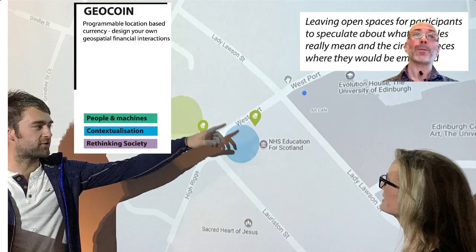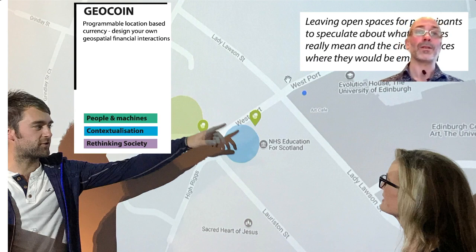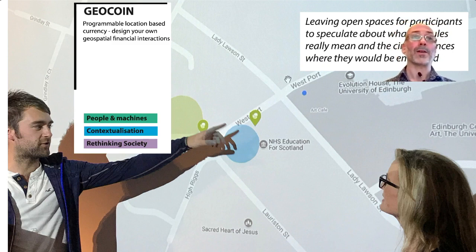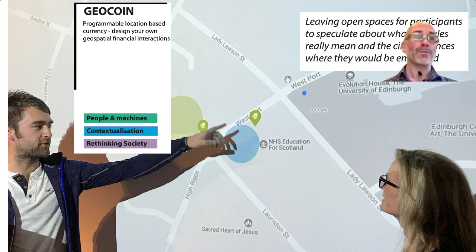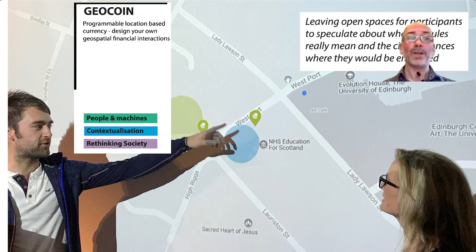Geocoin sets up an open body-storming experience that leads into the ideation and prototyping of geolocated currencies. Participants use a smartphone app to explore smart contract architectures connected to their own city surroundings and design their own value exchanges. Thematically, Geocoin was an infrastructural experience — drawing on methods such as probes and experience prototyping by offering a particular infrastructure that invited participants to intervene in or extend the system, an example of unfinished software as a design approach.